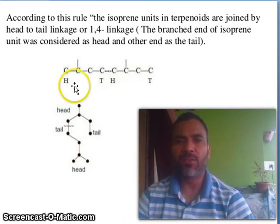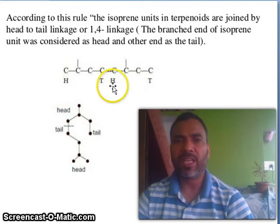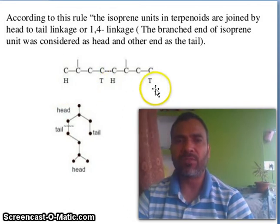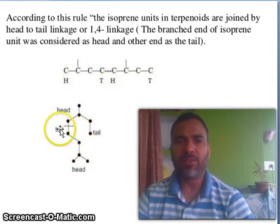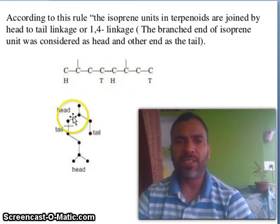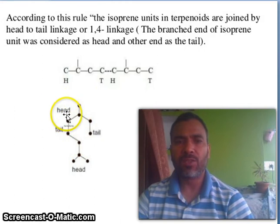Here is the tail. H for head, T for tail. Now you see here — here is the branched end, so this is the head and this is the tail.